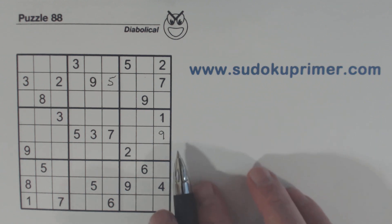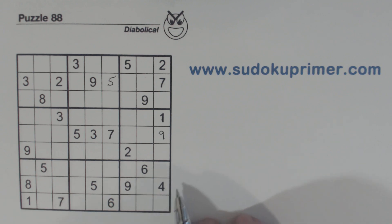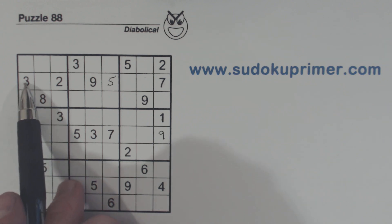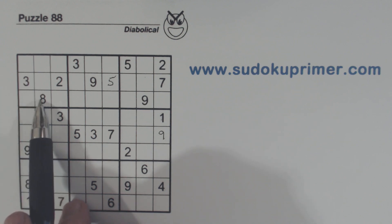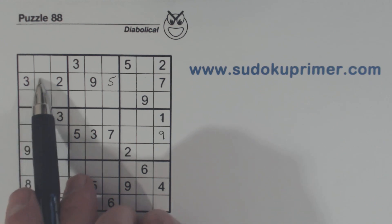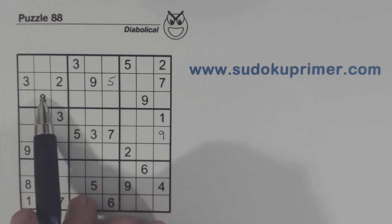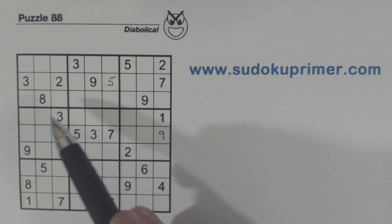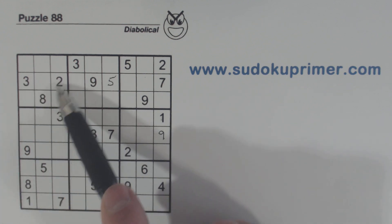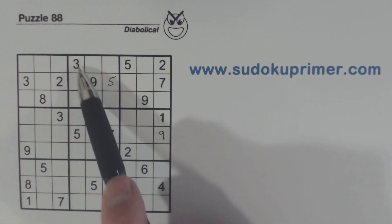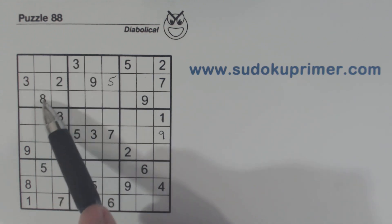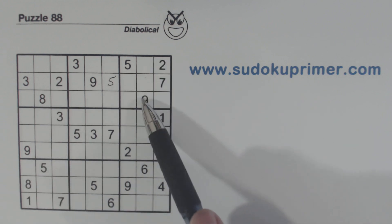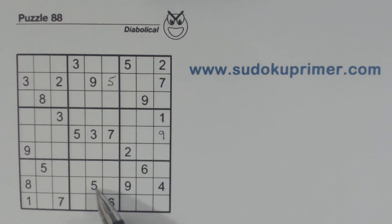Now I just put in those first couple of easy numbers. Let's talk about the diagonal pattern. Anytime you have two numbers that are kitty-corner from each other in the same box, this is a diagonal pattern and there's a potential of finding twins in the opposite cells. There are a lot of them here: three-nine, three-eight, eight-two, five-eight, nine-seven, nine-six, five-six.